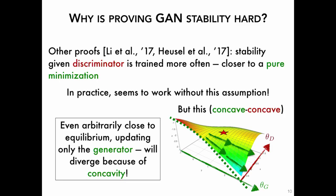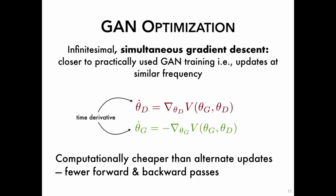Given this simultaneous gradient descent GAN optimization, here is our main result: despite the concave-concave GAN objective and despite not training the discriminator to optimality — not training the discriminator more times than the generator — surprisingly, simultaneous gradient descent GAN equilibrium is actually locally exponentially stable under suitable conditions. That is, there are no non-convergent dynamics at least near the equilibrium. Our main tool is nonlinear dynamical systems theory. The key theorem says: take the Jacobian of the system at equilibrium, compute its eigenvalues, and if they have strictly negative real parts, the equilibrium is locally exponentially stable.